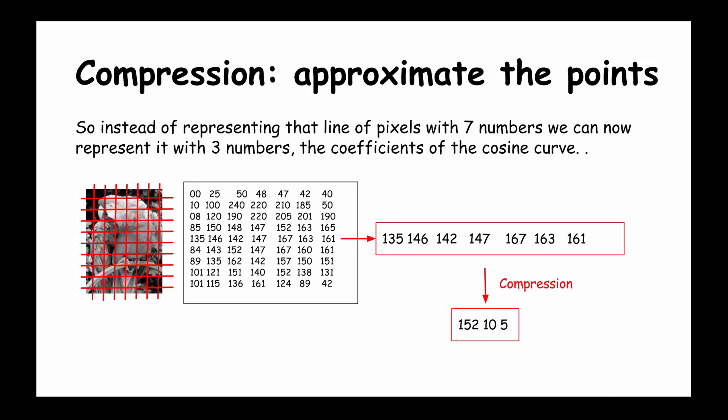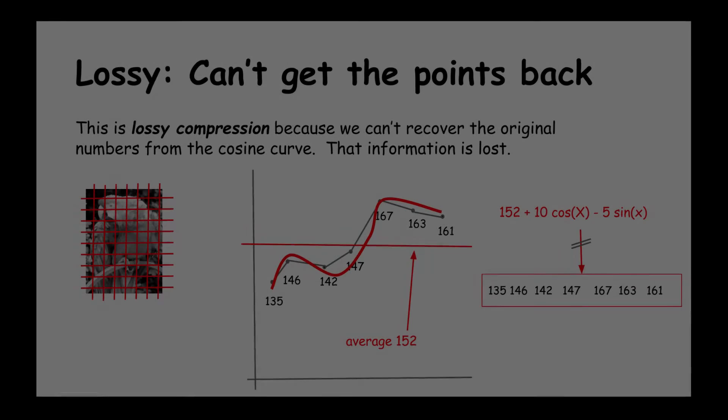So instead of representing that line of pixels with seven numbers, we can now represent it with the three numbers that you saw in that expression. The seven numbers have been reduced down to three numbers, or compressed.